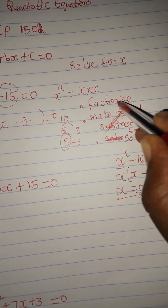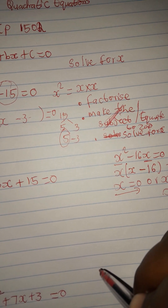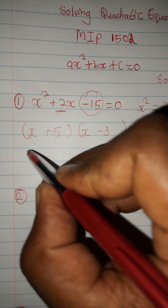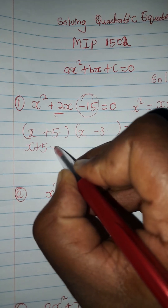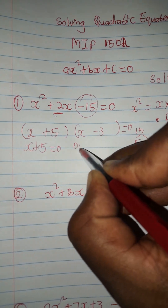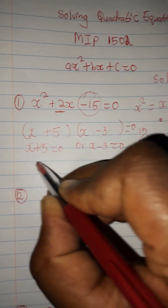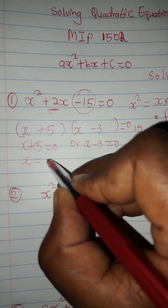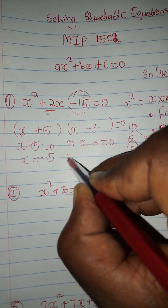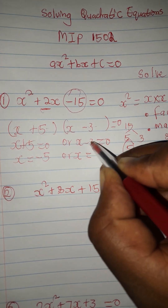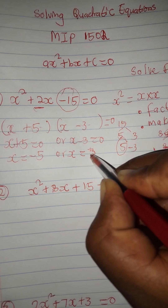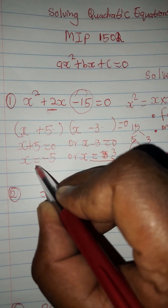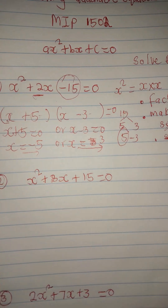Second step: you have already factorized. Now equate to zero — don't forget to make x the subject. The steps are: factorize, equate to zero, and solve for x. So we say x plus 5 equals zero, or x minus 3 equals zero. When you make x the subject, take positive 5 to the right-hand side — it becomes negative 5. Or take negative 3 to the right-hand side — it becomes positive 3. So our solutions are x equals negative 5 or x equals positive 3.